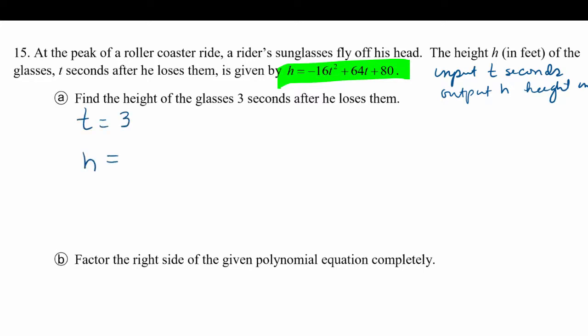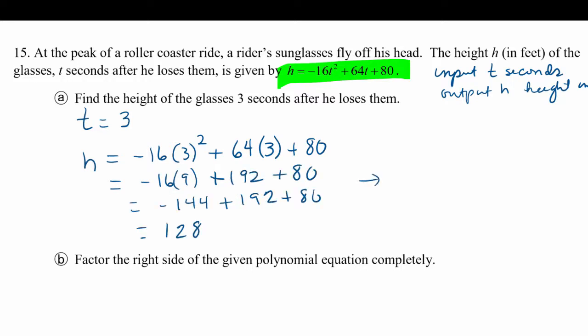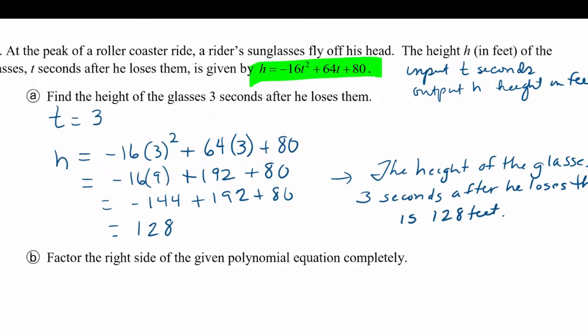And we're going to substitute 3 in for t and then use order of operations to simplify this equation. So the height of the glasses after three seconds of flight is 128 feet. That's our conclusion.